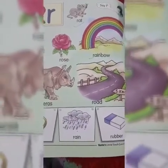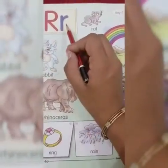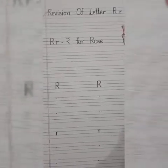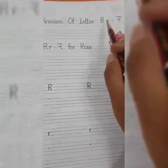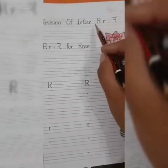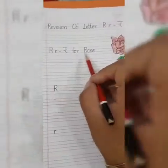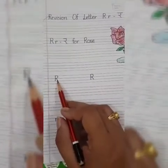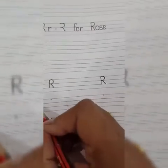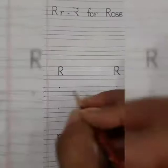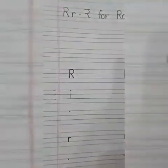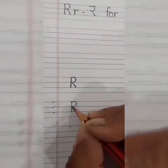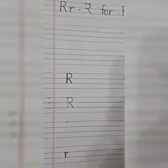Dear students, now I will tell you how to write capital letter R as well as small case letter R. Now let's revise the letter R — capital letter R, small case letter R. R sound R, R for rose. Starting from capital letter R, we will use these three lines to make capital letter R. Firstly, we will use a standing line, then a little curve to make letter P, then here we will use a slanting line. R.